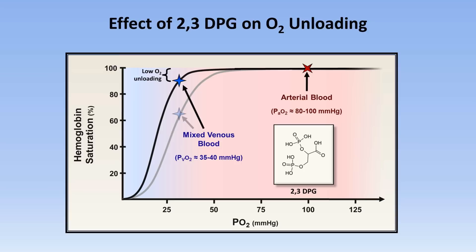The normal function of 2,3-DPG is that in states of hypoxia from a pulmonary etiology, red cells can increase their production of it, which drives the dissociation curve to the right, improving oxygen unloading.